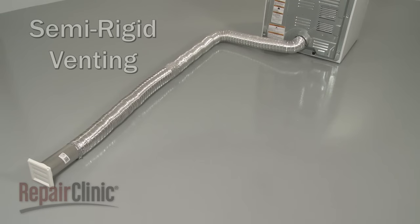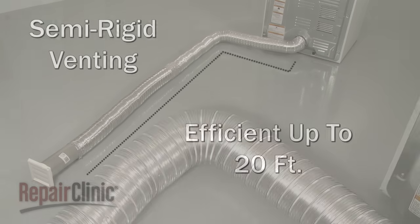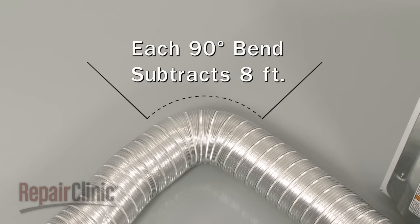The other type of venting you can use is semi-rigid. This type of material is usually efficient up to 20 feet in length. Again, any bend will impede air flow. A 90-degree bend will subtract 8 feet from the allowable 20-foot total.